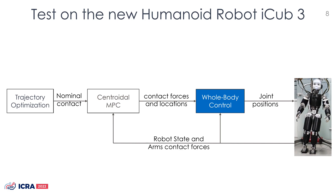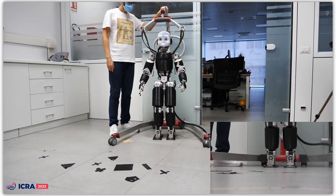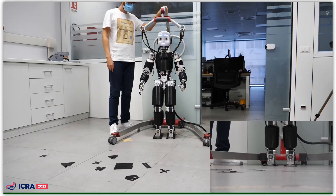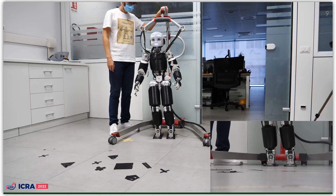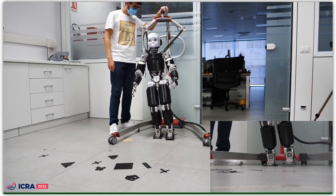Since the robot is in position control, it behaves rigidly when the external force is applied. Consequently, the position of the central mass is not perturbed. To mitigate this effect, we consider the estimated external force as a measured disturbance in the MPC.